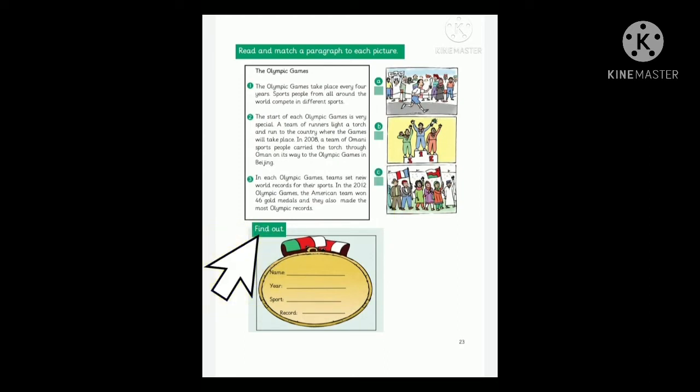Look at question two. Find out. Search in the internet or from books or from your family members for information. Write the name of the person, the year, the sport, and the record.